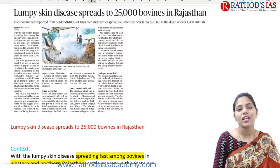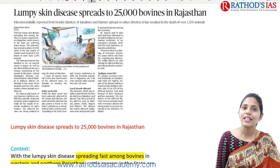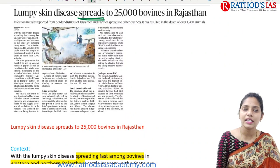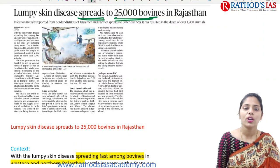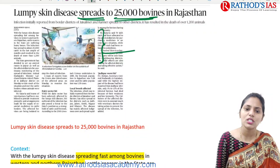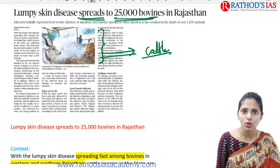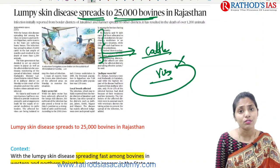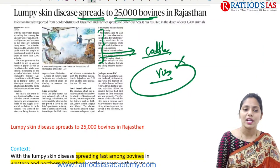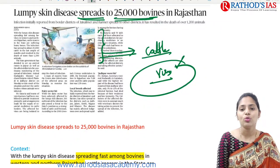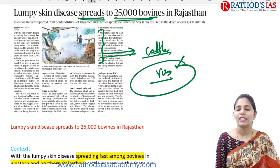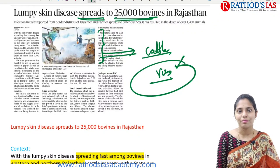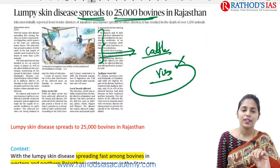Now let us move to the next topic: lumpy skin disease. The headline says lumpy skin disease spreads to 2,500 bovines in Rajasthan. This article is important from GS Paper 3 under science and technology. This lumpy skin disease is mainly seen in cattle and is caused by a virus, not bacteria. Whenever any disease is in the news, you need to know the causative organism, transmission, signs and symptoms, economic impact, and whether a vaccine exists.